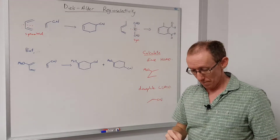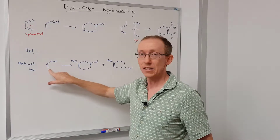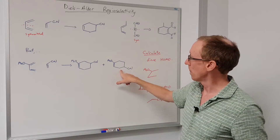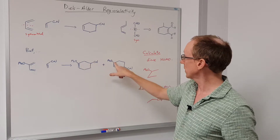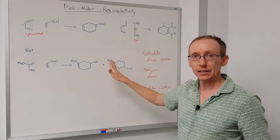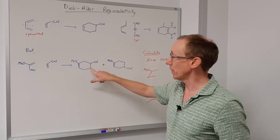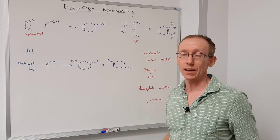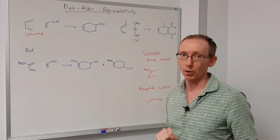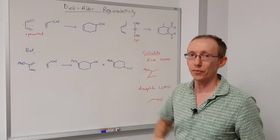But what happens if we have an unsymmetrical diene and an unsymmetrical dienophile? There are two possible products: the 1,3 product and the 1,4 product. Is there going to be any selectivity between the two? Well, actually there is. If you do the reaction, you can measure the outcome and then try to reason why you get more of one product than the other. It turns out we get more of the 1,4 product than the 1,3.